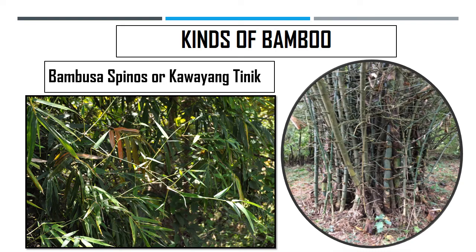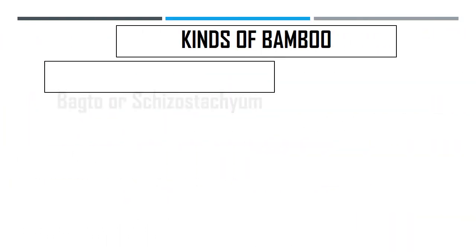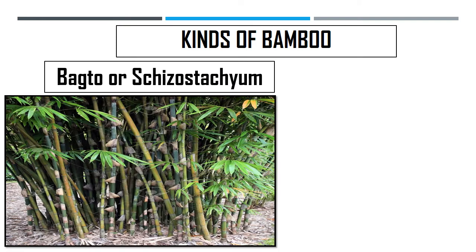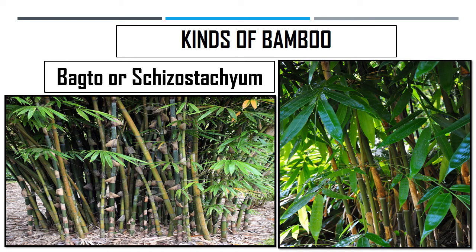Next, we have bagtu, or Schizostachyum lumampao. The internodes of this kind of bamboo are good materials for chairs, sawali, or bamboo matting. It can also be used to make flutes, weaving loom, and paper.